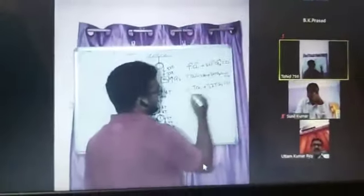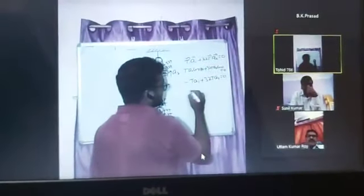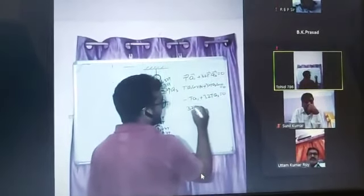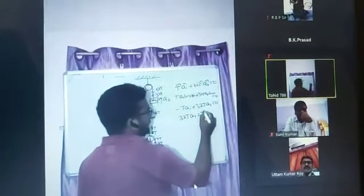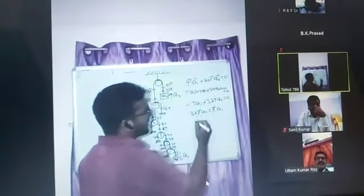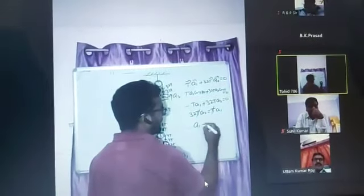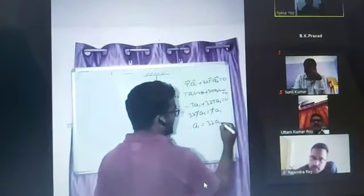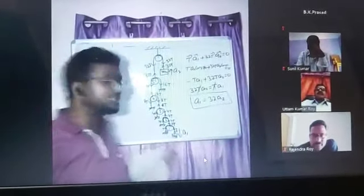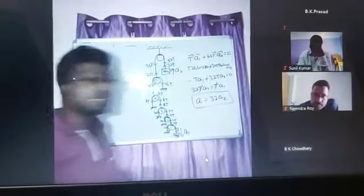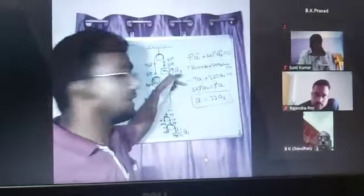So here, we can write, again, 32T A2 equal to T A1. Now after cancellation of T, we can write here, the A1 equal to 32 times of A2. So now, with the help of this one, we can see that the acceleration of this M1 is 32 times than the acceleration of M2.